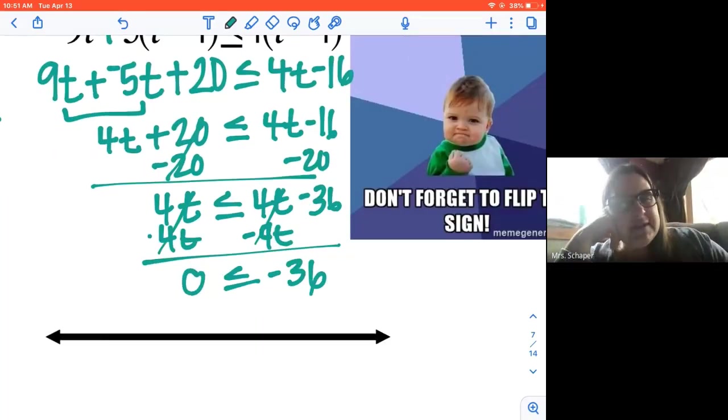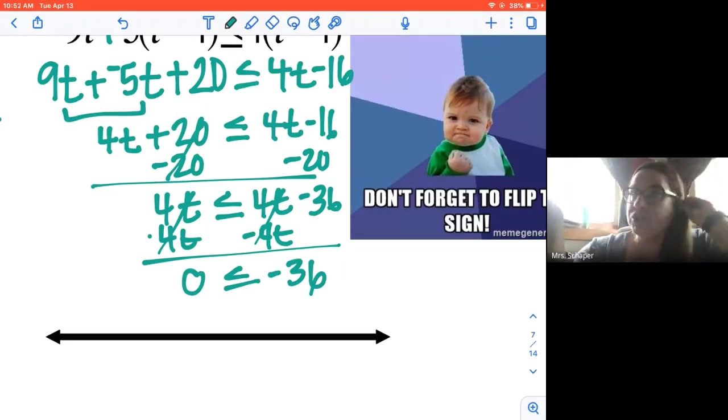And what's happening here is we get that zero is less than or equal to negative 36. And we had some equations that were like that, that they just weren't true. Like there wouldn't be any way to graph it on there because there's no variable. Like it just wouldn't work. And so you would write here, no solution.